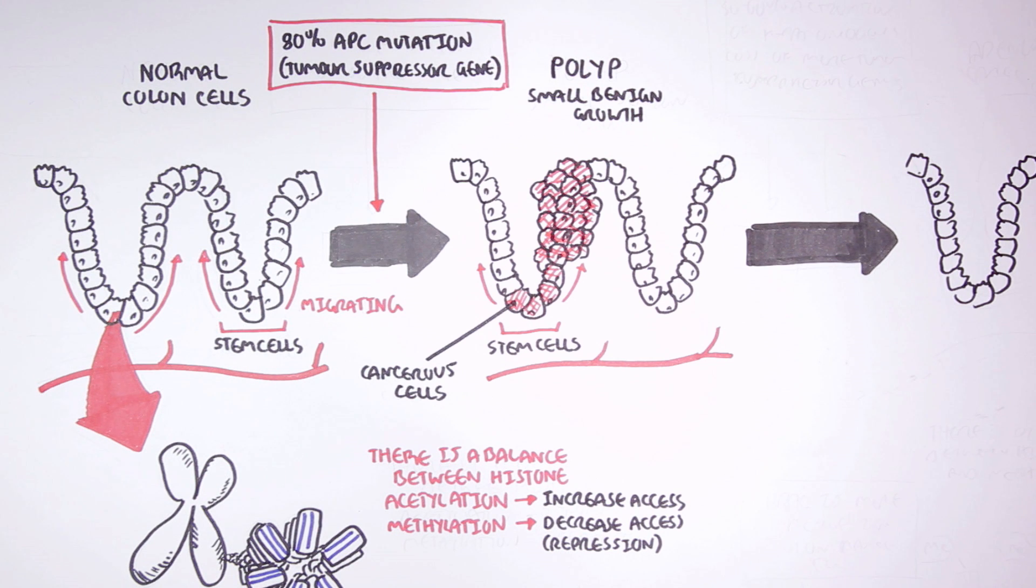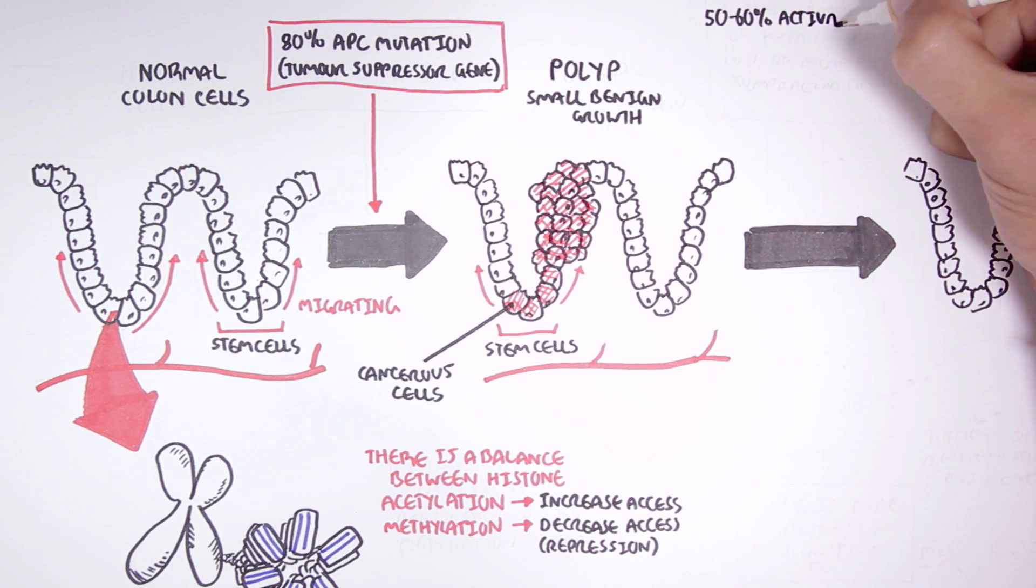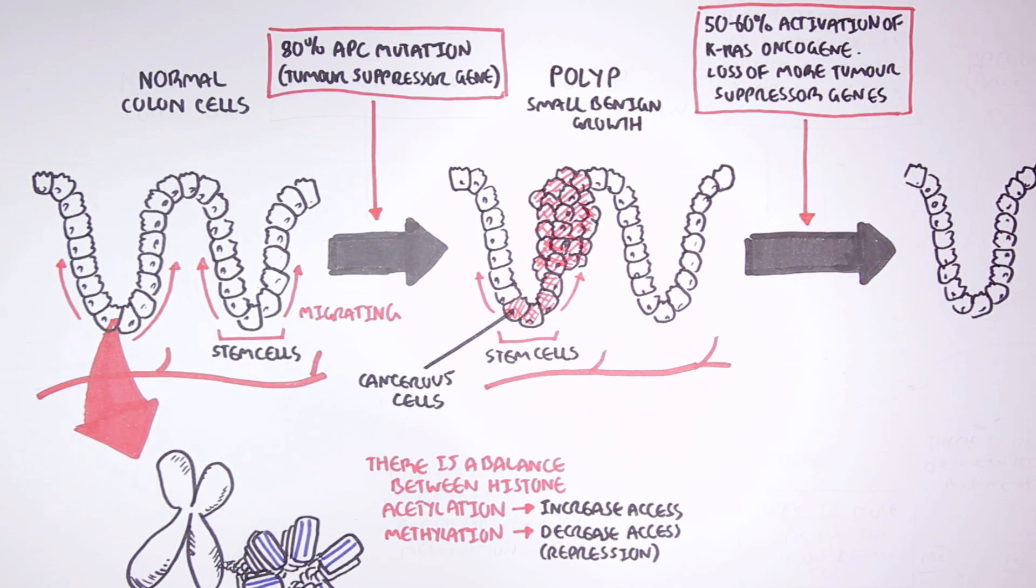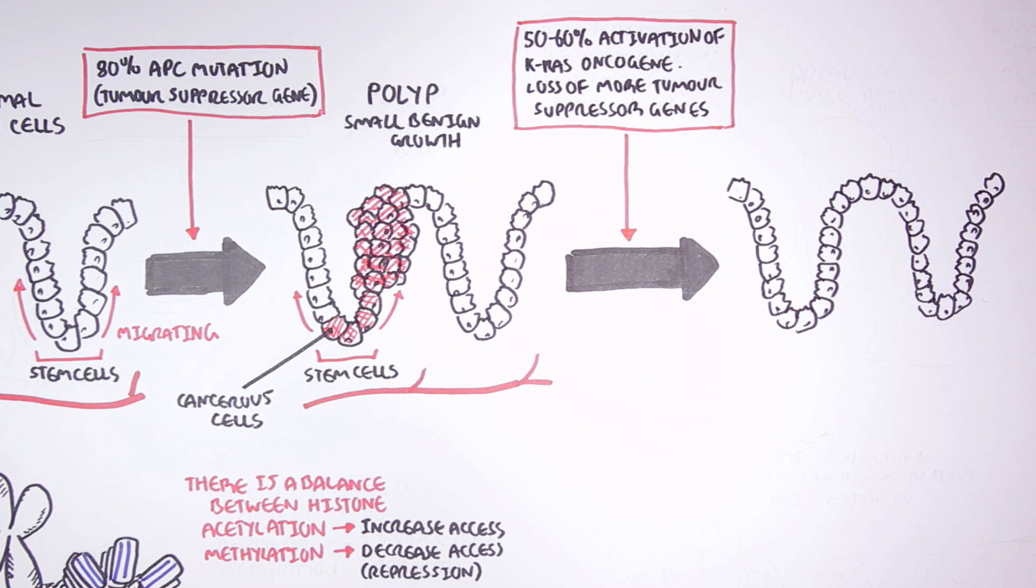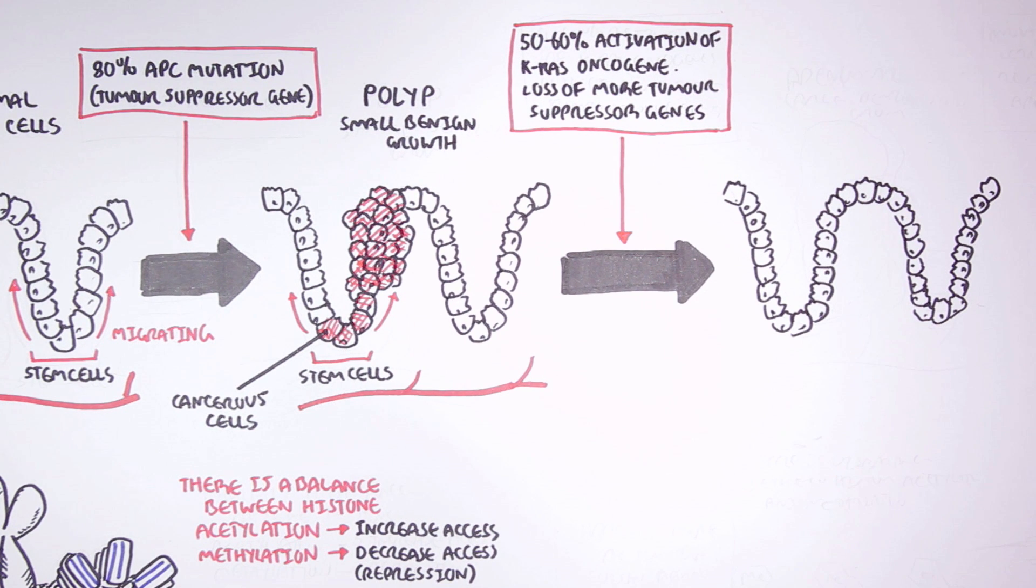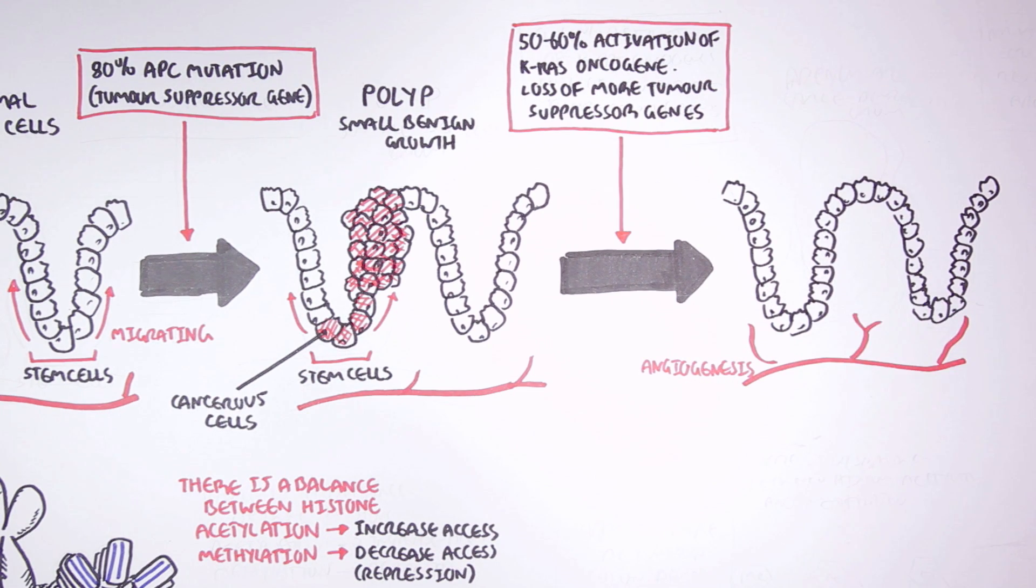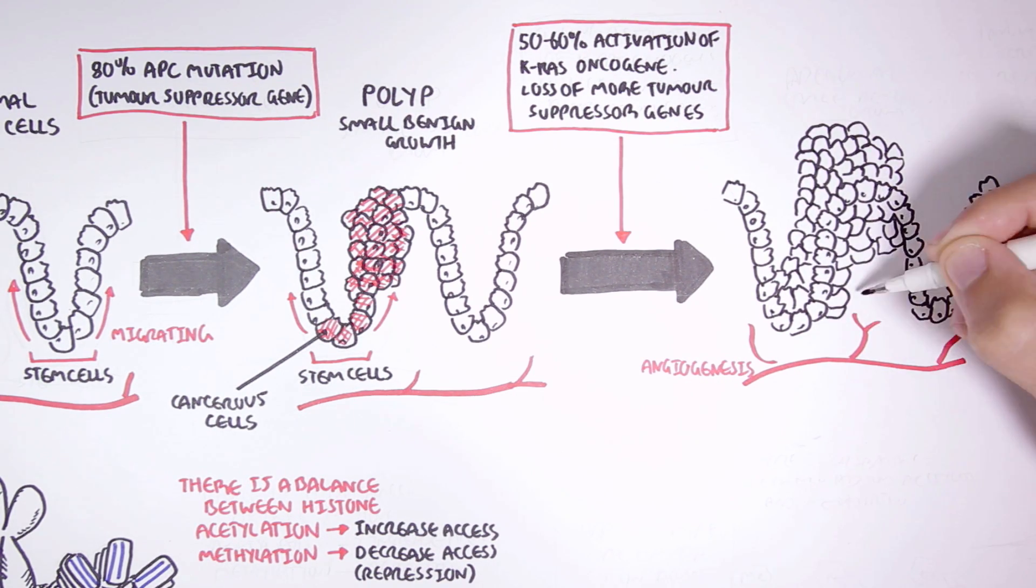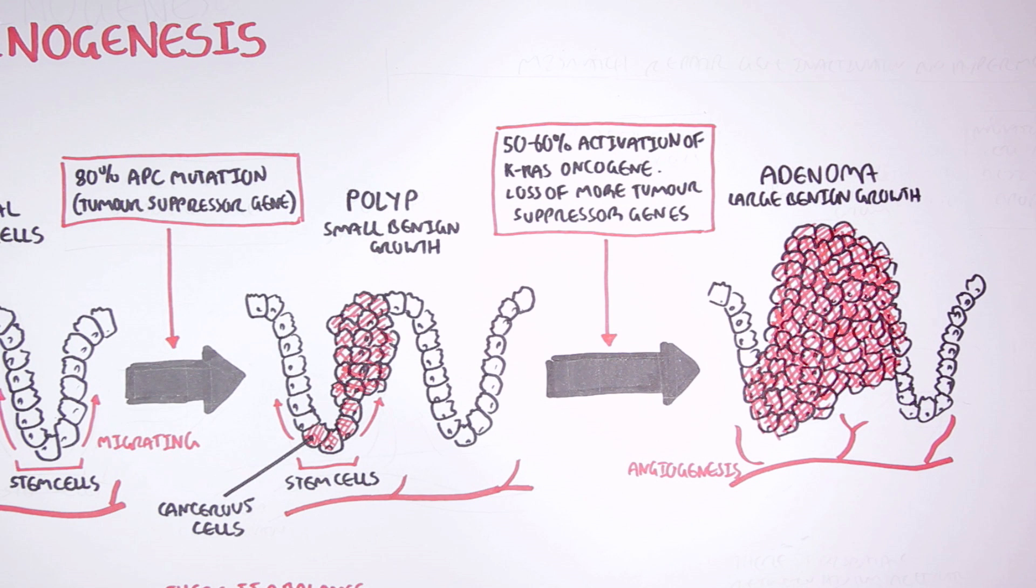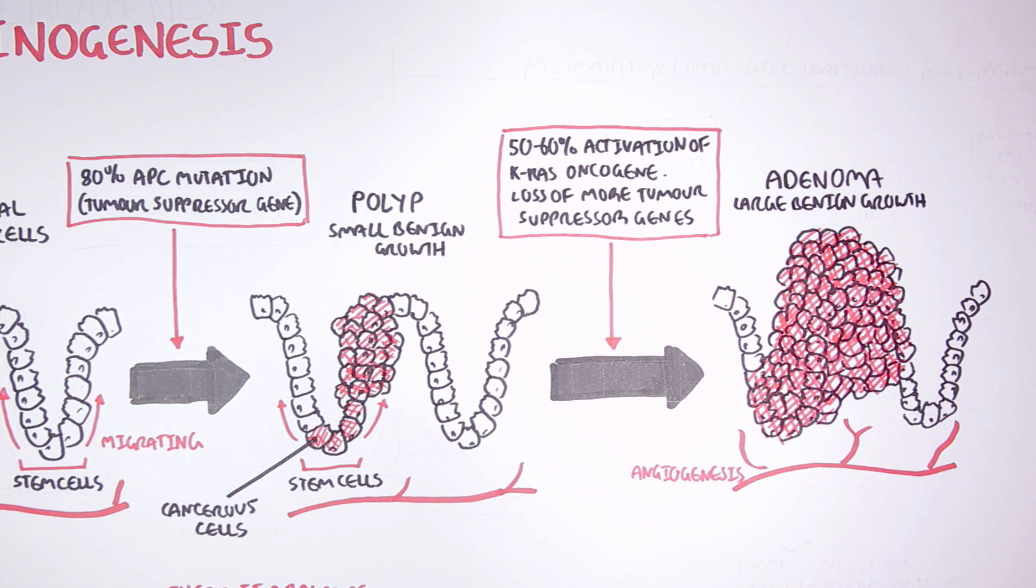However, with more mutations, such as in 50 to 60 percent of colon cancer cases, there is activation of the KRAS oncogene as well as more mutations of other tumor suppressor genes. The KRAS gene normally controls cellular division. However, a mutation of the KRAS gene results in a KRAS oncogene and thus cell proliferation. The cells will begin to proliferate, creating an adenoma, which is a larger benign growth. During this time, as the cells keep dividing, there needs to be more blood supply to feed the growing tissue. So angiogenesis, which is formation and maturation of blood vessels, occurs.